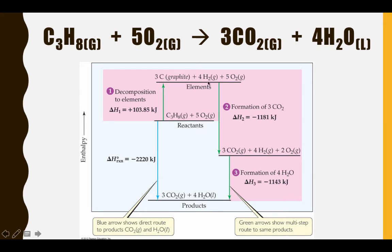However, once these elements form new bonds, we can use the standard enthalpies of formation of the products to figure out how much energy is released. The difference between these values is our enthalpy of reaction. In this case, we've released 2220 kilojoules more than we had to put in to break down the reactants.